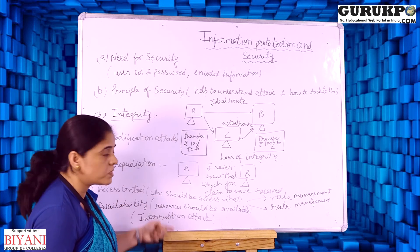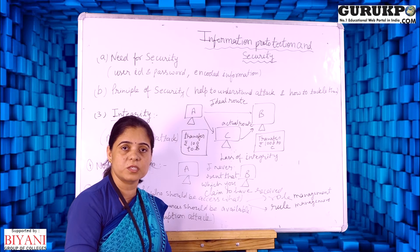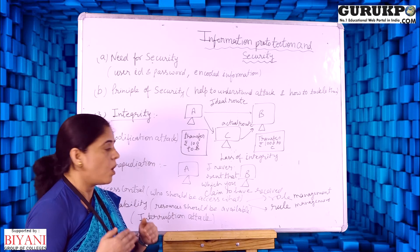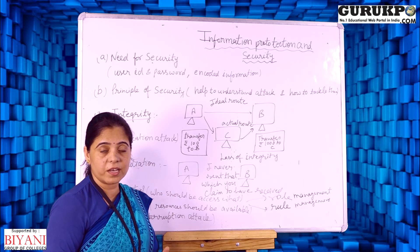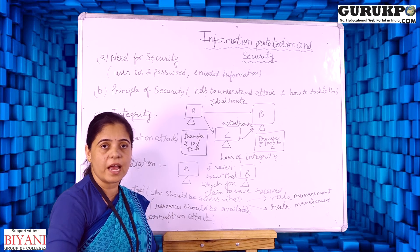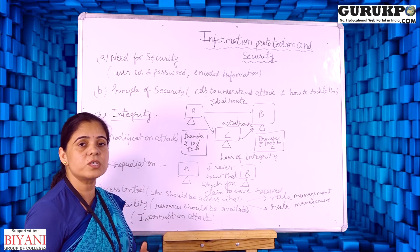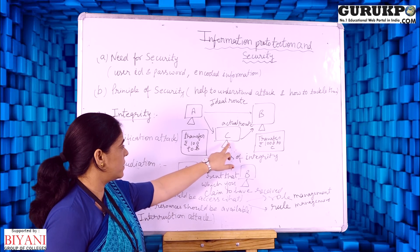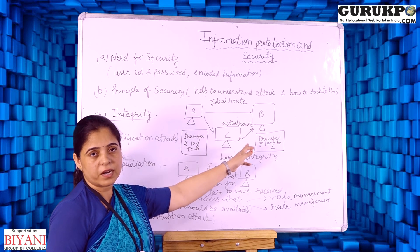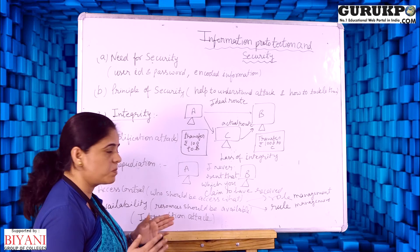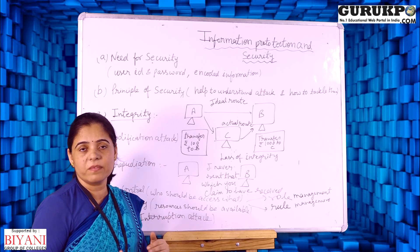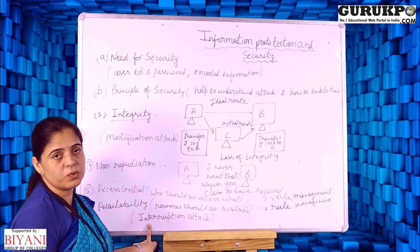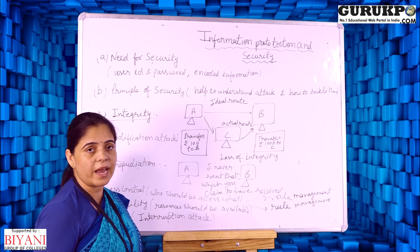The last principle of security is availability: resources should be available to all authenticated users — senders and receivers — at all times, provided messages are confidential and unmodified. If attacker C accesses all resources between A and B, then A and B cannot access them. This type of attack is called an interruption attack, because C is interrupting the resources of A and B.